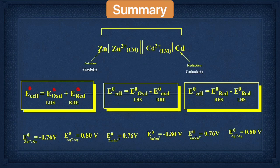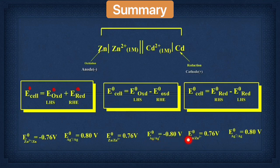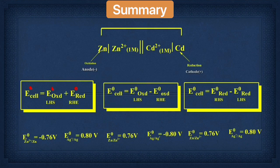This is all about the EMF calculation. If oxidation potential or reduction potential is given, you can easily calculate the EMF using the appropriate formula. This is all about my Lecture 3. You may be curious about where the electrode potential values come from — for example, E°(Zn²⁺/Zn) = −0.76 V or E°(Ag⁺/Ag) = +0.80 V. Don't worry — you will get the answer when we talk about the electrochemical series. Take care. Goodbye.